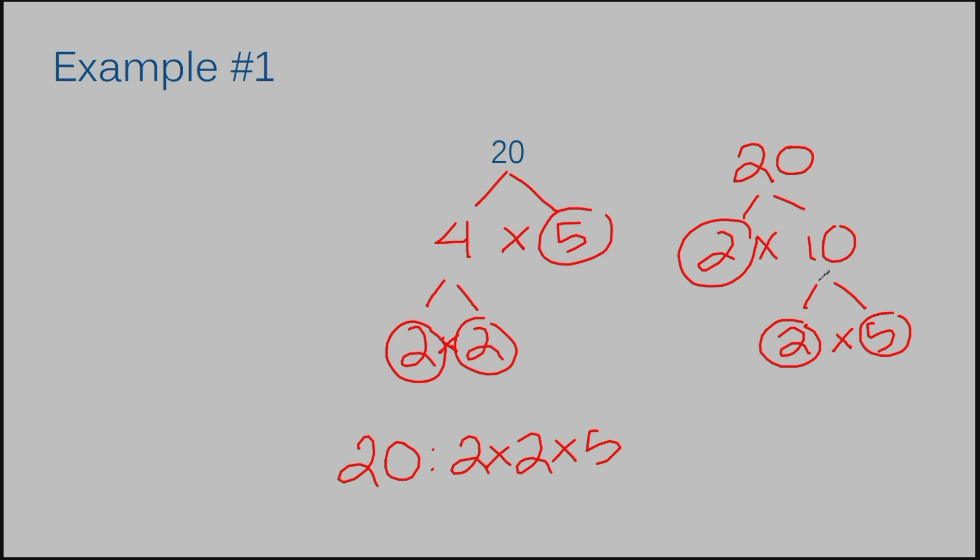If you notice, we end up circling the same numbers at the end of our tree no matter which way you initially start breaking it down. That means we're going to have the same numbers here to multiply together. We have 2 times 2 times 5 here and we have 2 times 2 times 5 here. We're going to get the same answers no matter what as long as you are using numbers that do really multiply to get your numbers. So it does not matter which combination you use.